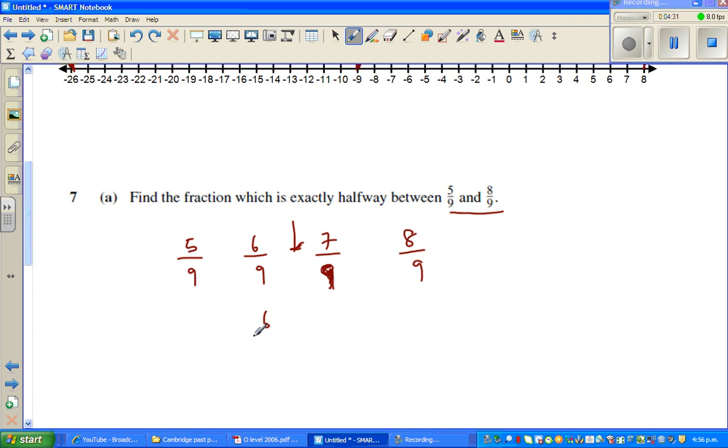So that is 6/9 plus 7/9 divided by 2, which is 13/9. So this is 2 over 1 times 1/2, which is 13/18.